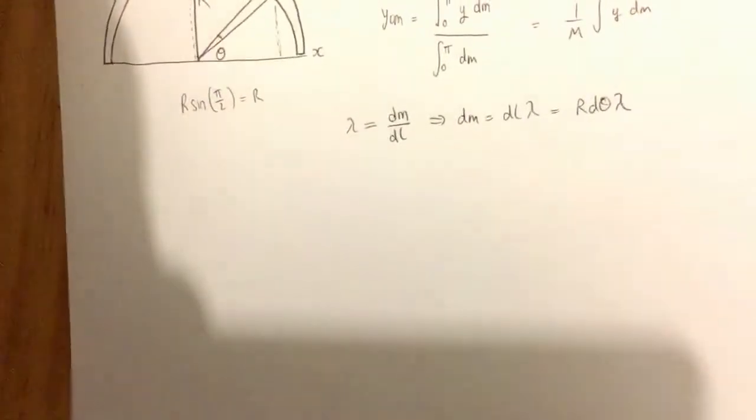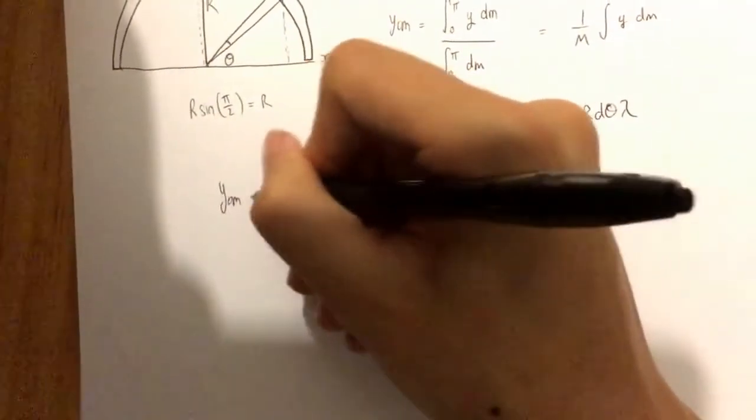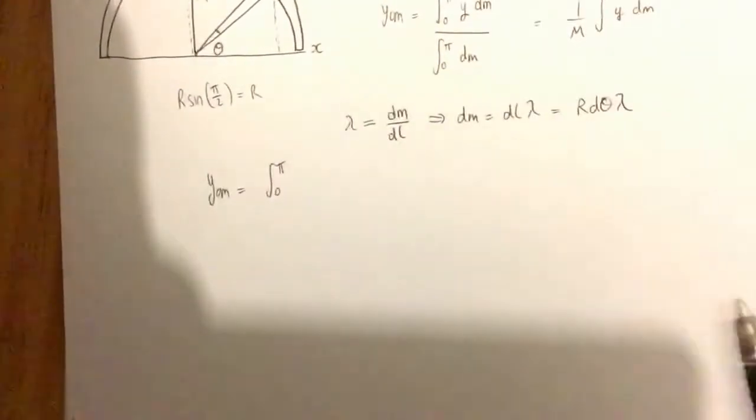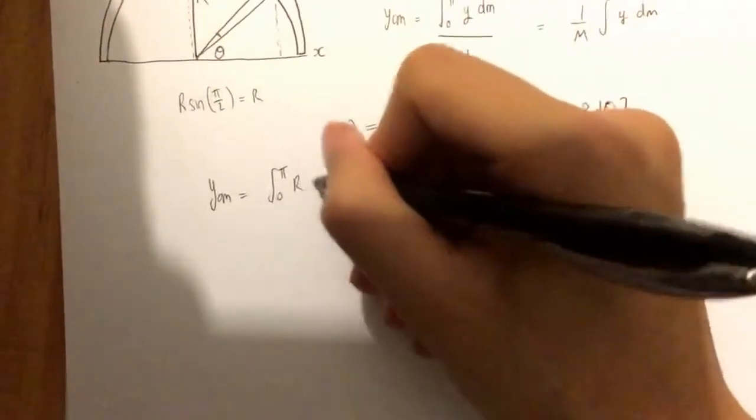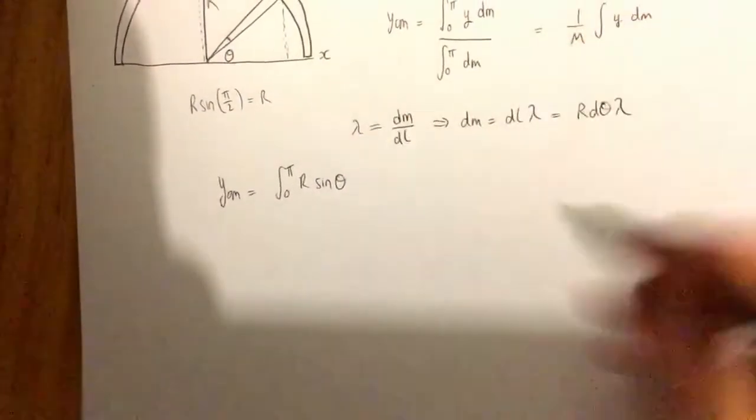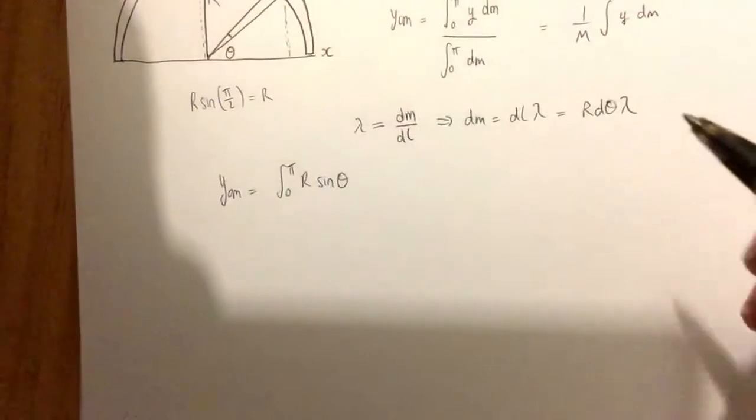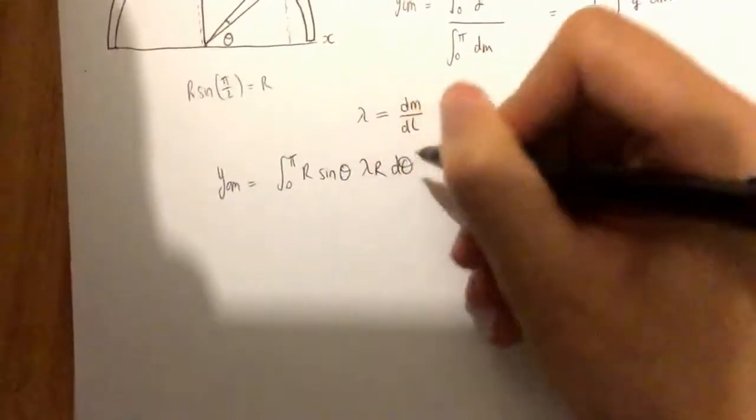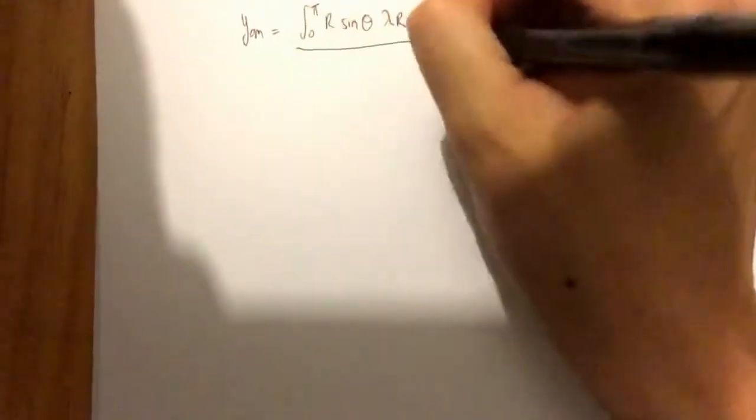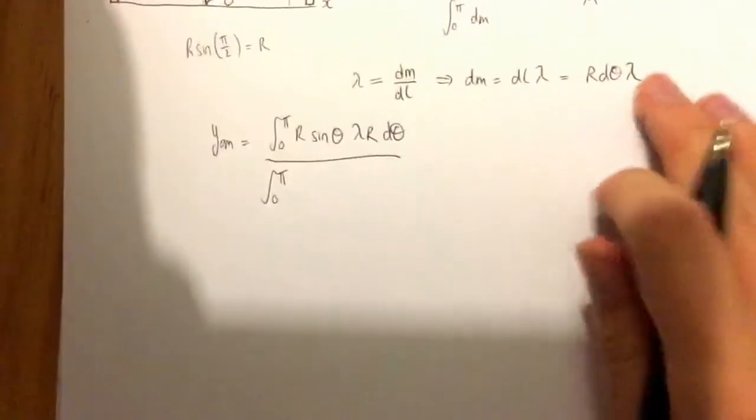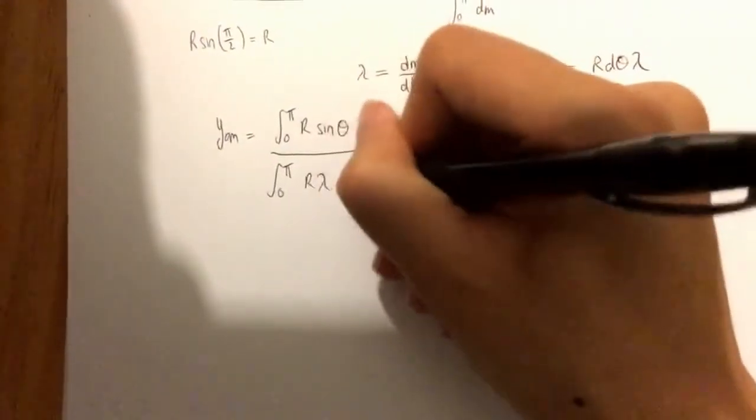So now we can substitute this into our centre of mass equation. So integrating from 0 to pi, and y was just the y coordinate of the masses, which we identified as being r sine theta. And obviously now we need to substitute in dm, and dm, well we just worked that out, it's lambda r d theta. And that's going to be divided by the differential masses. So we're going from 0 to pi of the differential mass, and the differential mass, well again we just worked it out, r lambda d theta.